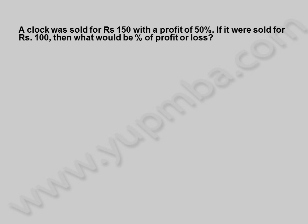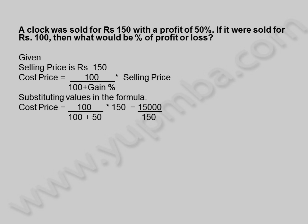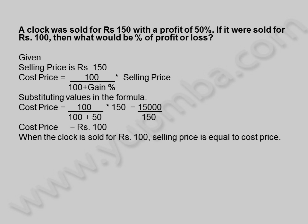Let us see another example. A clock was sold for 150 rupees with a profit of 50%. If it was sold for 100 rupees, then what would be the percentage of profit or loss? Given selling price is 150 rupees, cost price is equal to 100 divided by (100 plus gain percentage) into selling price. Substituting values: cost price equals 100 divided by (100 plus 50) into 150, which equals 15000 by 150.